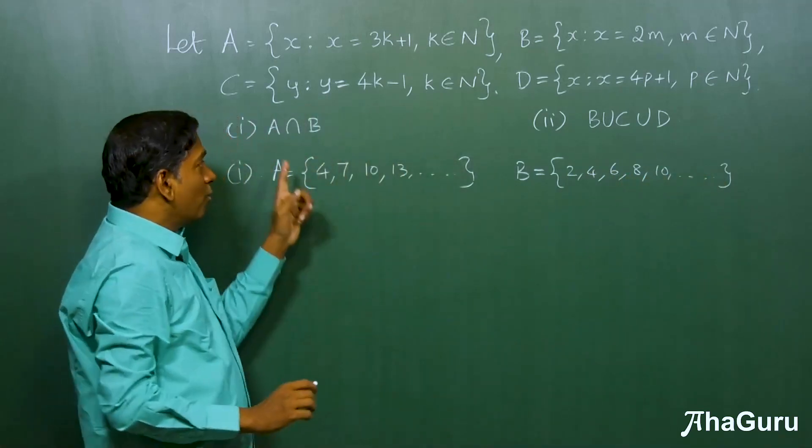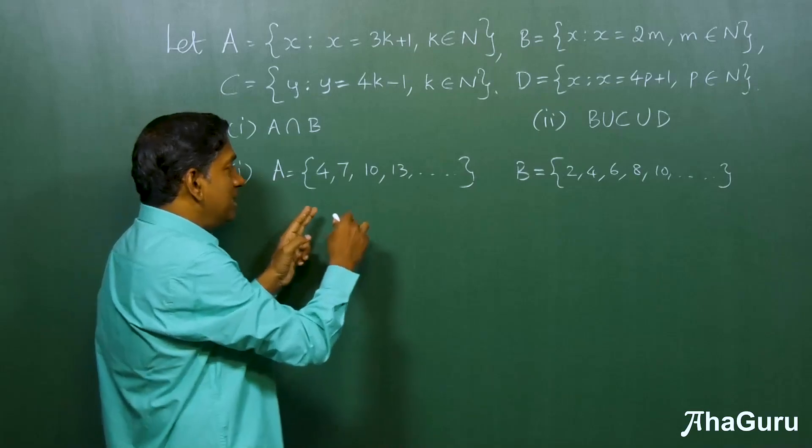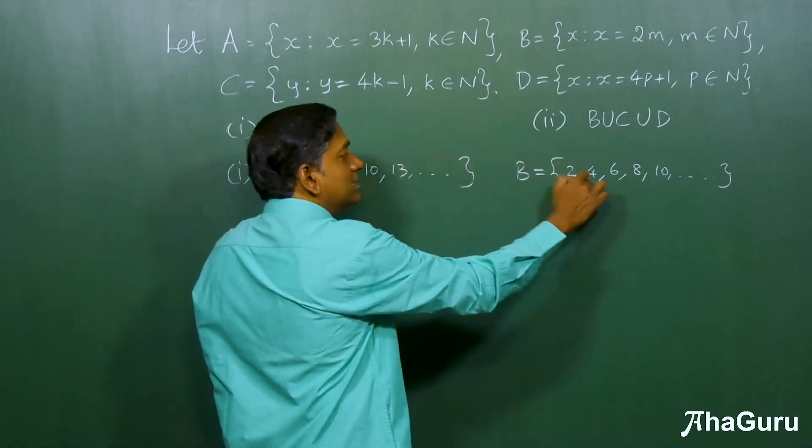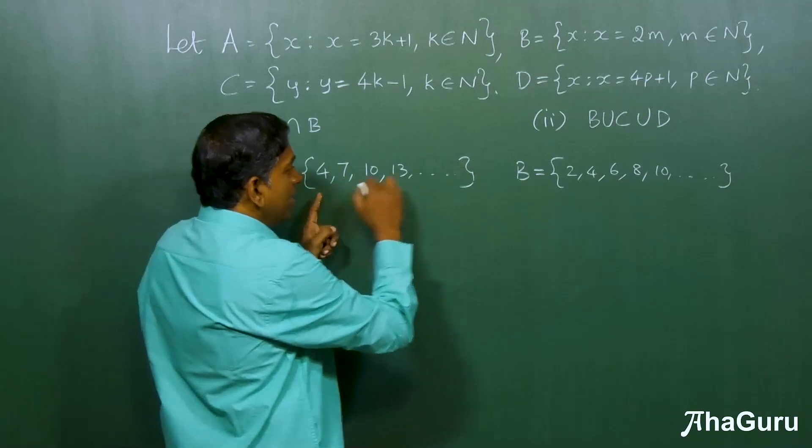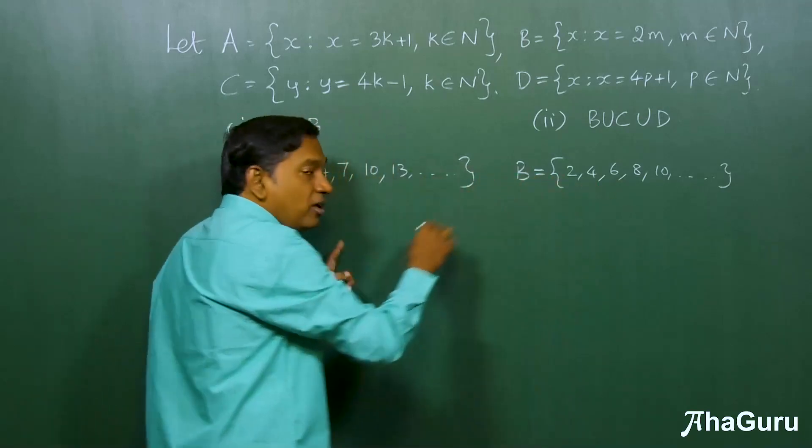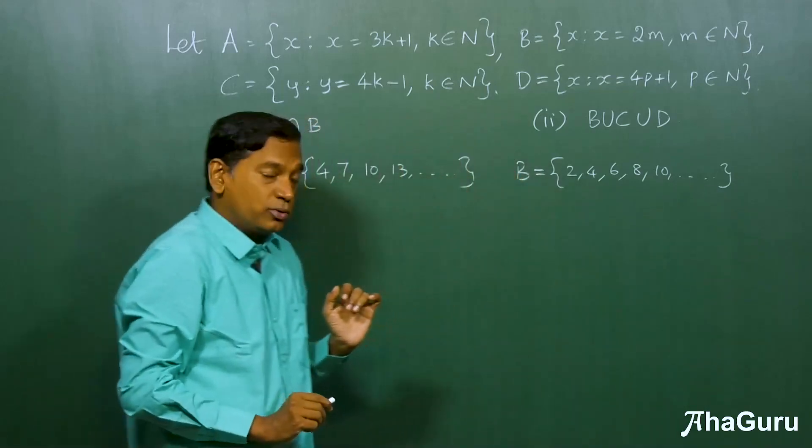Now the question is, what is A intersection B? Now, elements that are in this set as well as in this set. Well, if you look at the intersection, definitely they all have to be only even numbers, because B has only even numbers.